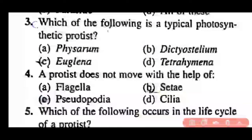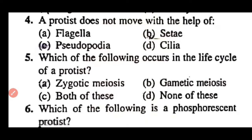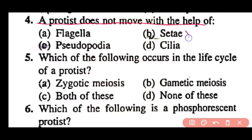Question 3: Which of the following is a typical photosynthetic protest — Fisarium, Dictyostelium, Euglena, or Tetrahymena? Correct answer is option C. Euglena is a photosynthetic protest. Question 4: A protest does not move with the help of flagella, cyta, pseudopodia, or cilia? Correct answer is option B. Cyta are absent in protests; protests can move with the help of flagella, pseudopodia, as well as cilia.